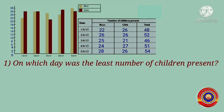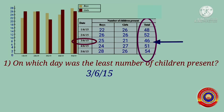Question 1: On which day was the least number of children present? Look at the total column and find out on which day the least number of children were present. Yes, it was on 3rd June 2015.